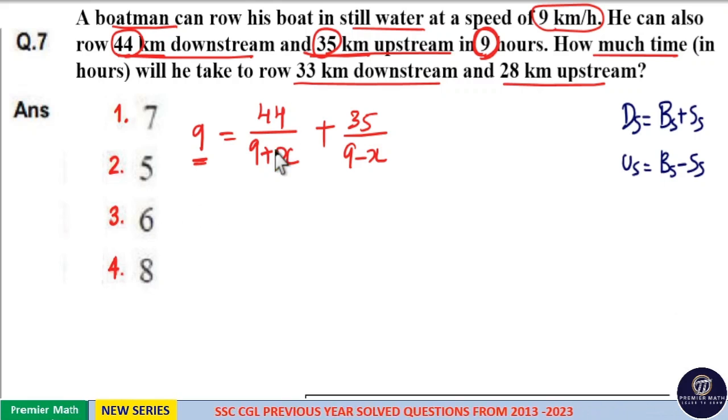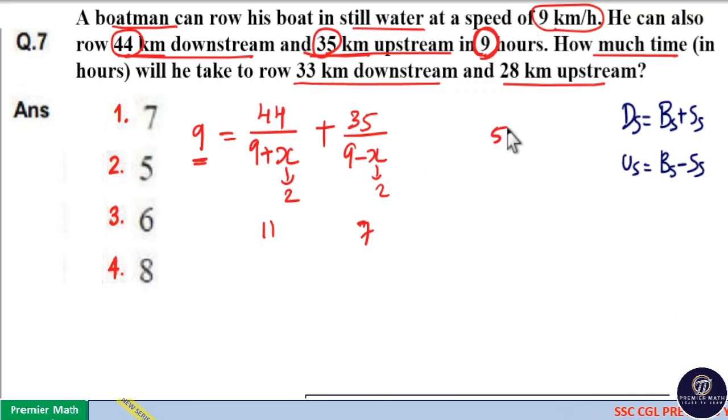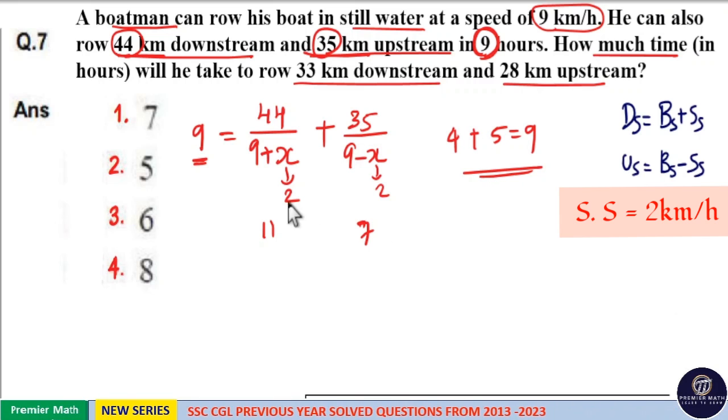Now if I take x as 2 km per hour, you can see 9 plus 2 is 11 and 9 minus 2 is 7. 7 goes 5 times in 35 and 11 goes 4 times in 44. So 4 plus 5 is 9. Equation satisfies, which means speed of stream is equal to 2 km per hour.